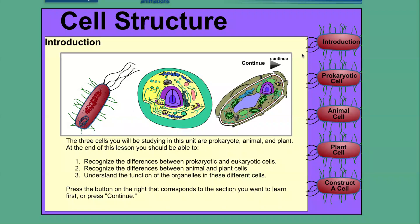If you want to check again your knowledge about three kinds of cells, you try with prokaryotic cells, animal cell, plant cell. And the last one that you need to finish is construct a cell. So you see here we have three cells and at the end of this lesson you should be able to...